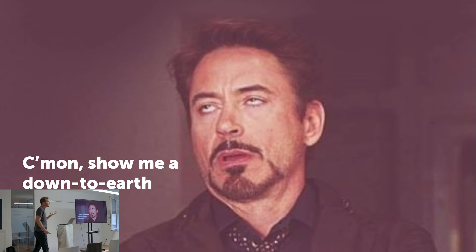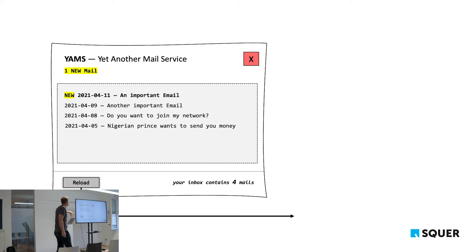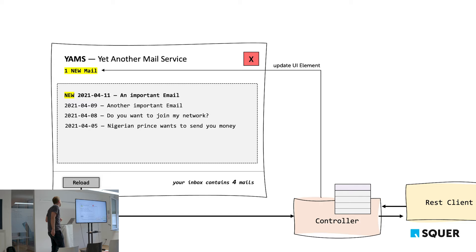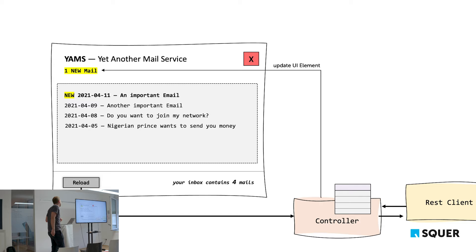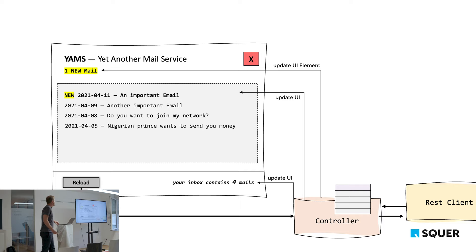A down-to-earth example: a simple mail service. Years ago we'd implement a reload button that triggers a controller, which calls a REST service, gets new emails, stores them in the controller, and then updates all UI elements — the email list and the email count. This approach is error-prone because you always risk forgetting to update one of these values. A simple solution is reactive design — introduce a stream.